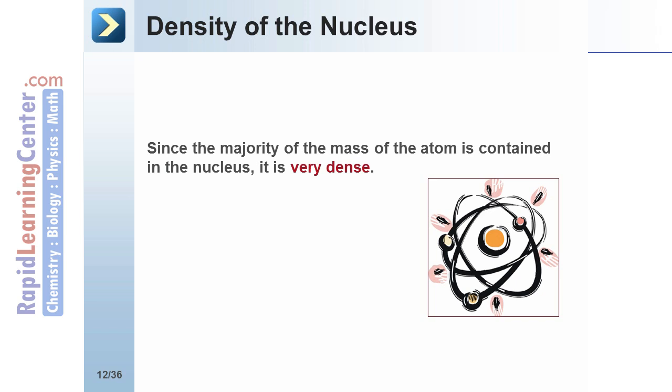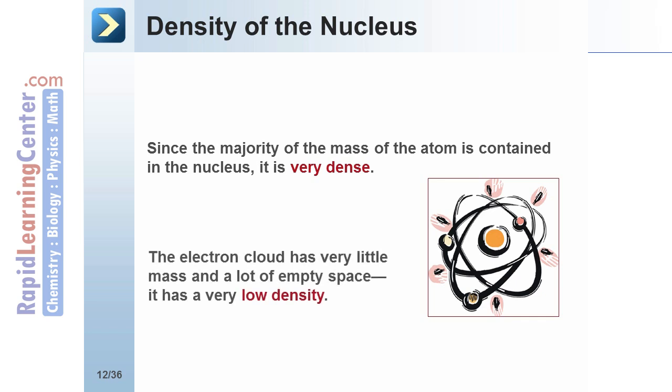Since the majority of the mass of the atom is contained in the nucleus, it's very dense. It has a large mass for its size. The electron cloud has a very low density. It takes up much more space, but with a much smaller mass.